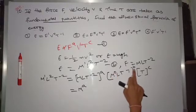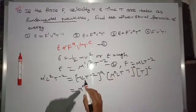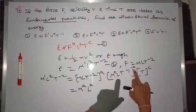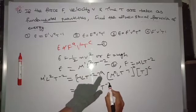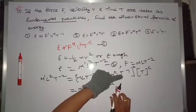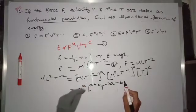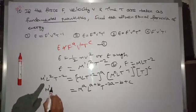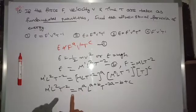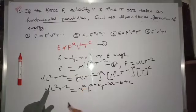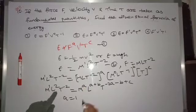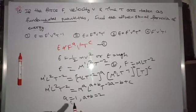Expanding the right side: M^a · M^0 gives M^a; L^a · L^b gives L^(a+b); and T^(−2a) · T^(−b) · T^c gives T^(−2a−b+c). Equating powers of M: a = 1. Equating powers of L: a + b = 2, so substituting a = 1, we get 1 + b = 2, therefore b = 1.